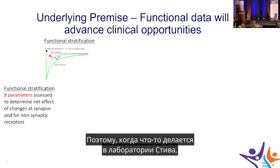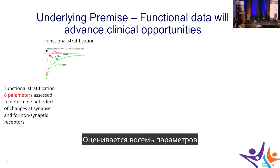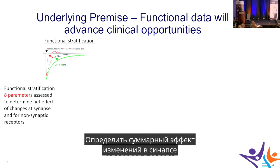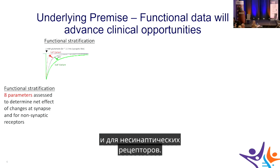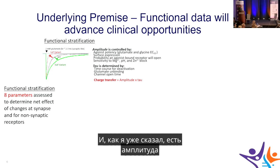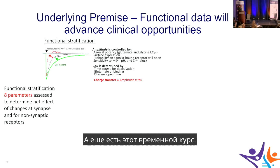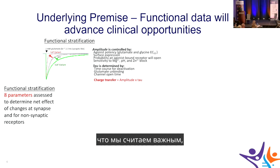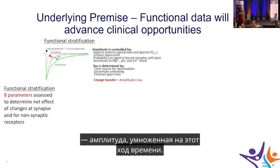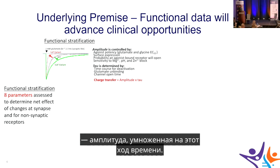In Steve's lab, eight parameters are assessed to determine the net effect of changes at synaptic and non-synaptic receptors. These include amplitude and time course, with charge transfer — the key metric — being the product of amplitude times time course.